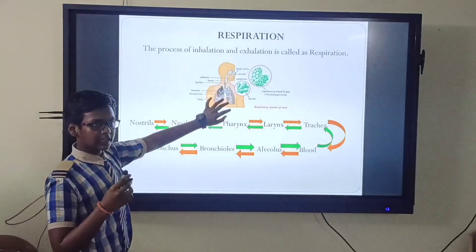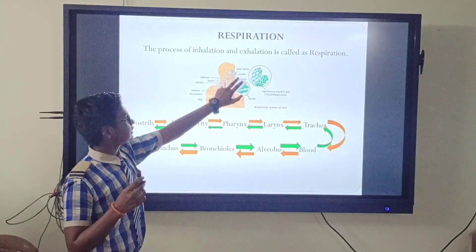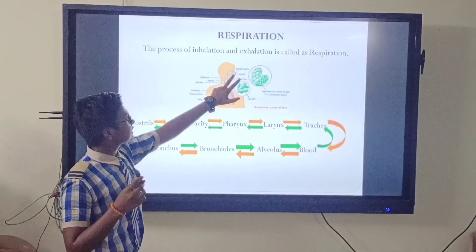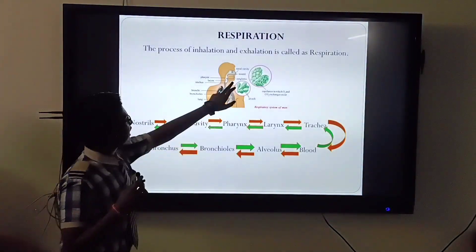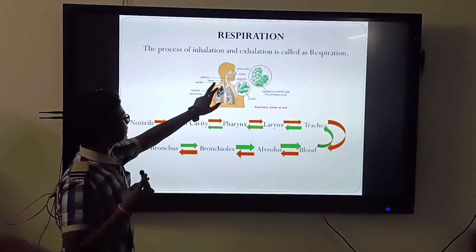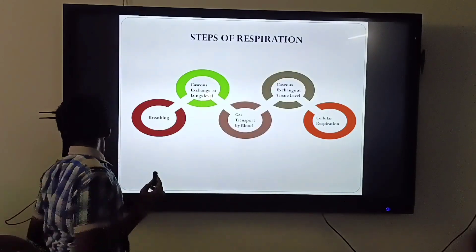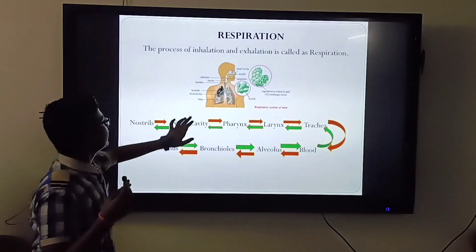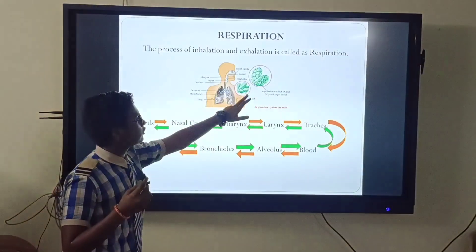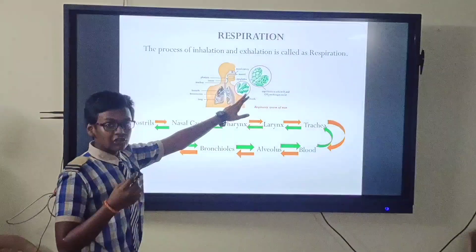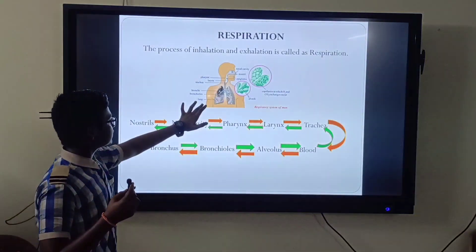This is the diagram of the pathway of air. This is the nostrils. Next, air enters into the nasal cavity. Next, air enters into the pharynx. Next, the larynx. Next, the trachea. Next, the bronchus. Next, the bronchioles. This is the alveolus, where air exchange takes place. And next, air enters into the blood.